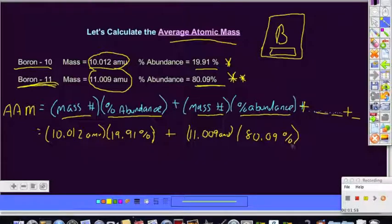Now before we multiply by our percent, remember to remove the percent sign by dividing by 100. We actually have to multiply that mass number by 0.1991. And the same for the mass number, we're going to multiply by 0.8009, because we took the percent and divided it by 100.